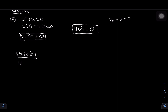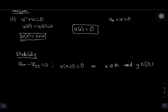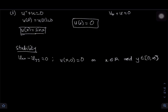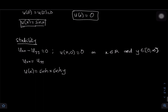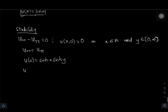For stability, consider the PDE u_xx - u_yy = 0, subject to the initial condition u(x, 0) = 0, where x is on the entire real line and y is from 0 to infinity. Here u_xx = u_yy, and the solution is u(x, y) = sinh(x)·sinh(y). The solution exists and appears unique — but let's check stability.